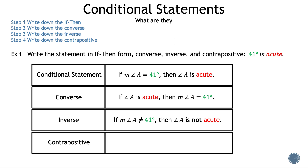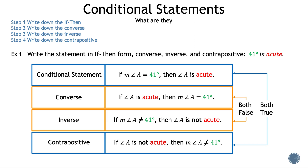Next, let's find the contrapositive. Remember, the hypothesis and the conclusion switch, and we negate them. The contrapositive statement is: if angle A is not acute, then the measure of angle A does not equal 41 degrees. Now that we've filled out our table, it follows a pattern: the conditional statement and the contrapositive are true, and the converse and inverse are false. That is example 1.